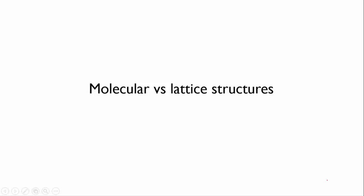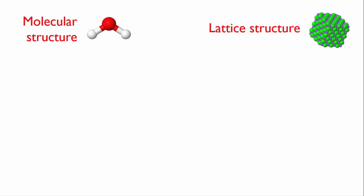In this video we're going to clarify the difference between molecular and lattice structures. We've now looked at covalent bonding, ionic bonding and metallic bonding, which covers all the chemical bonding possible.